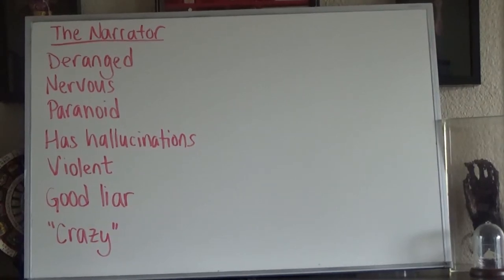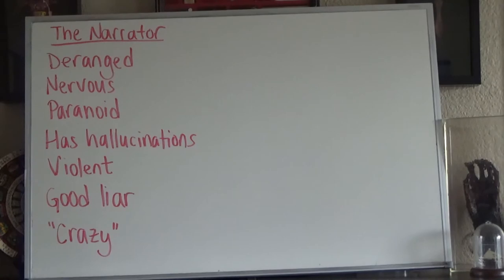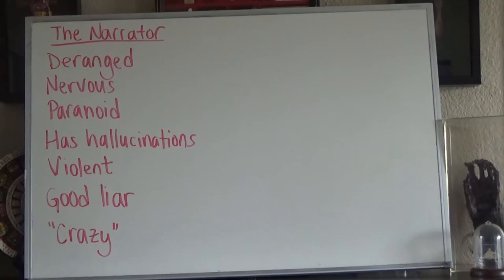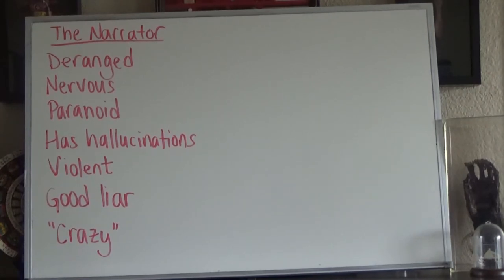Usually I will ask my class to come up with a list of adjectives or descriptive words to describe this narrator, and in a nutshell, the list I usually get is: deranged, nervous, paranoid. He has hallucinations — he tells us at some point that he thinks he can hear every sound not only on earth, but all the noises in heaven and hell. We know he's violent, and as the story gets going, we start to see that he's a very good and effective liar. I always get students telling me he's crazy, and I put that in quotes because that's a slang term — in your writing you want to use more academic language.